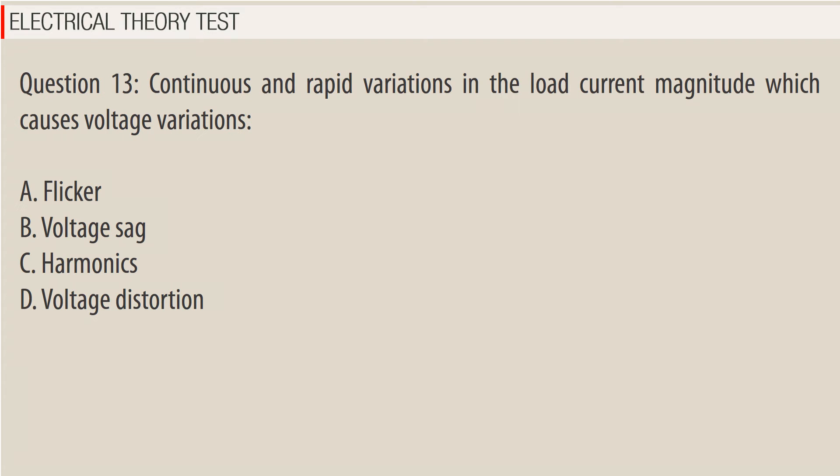Question 13: Continuous and rapid variations in the load current magnitude which causes voltage variations. A. Flicker. B. Voltage sag. C. Harmonics. D. Voltage distortion.